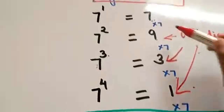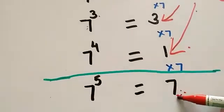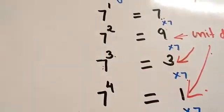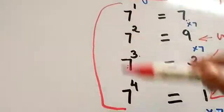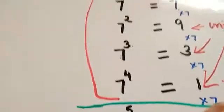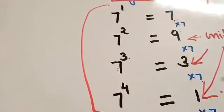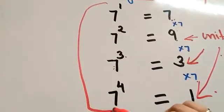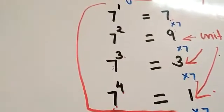Continuing: 7 raised to the power 6 gives unit digit 9, because 7 into 7 is 49. 7 raised to the power 7 gives unit digit 3, and 7 raised to the power 8 gives unit digit 1 again. So the cycle for 7 has length 4, with unit digits repeating as 7, 9, 3, 1.